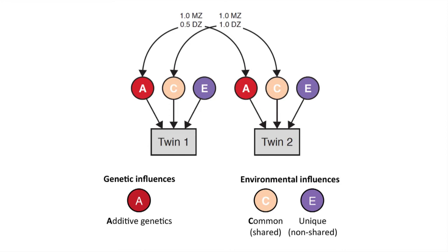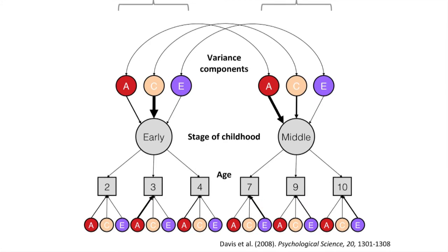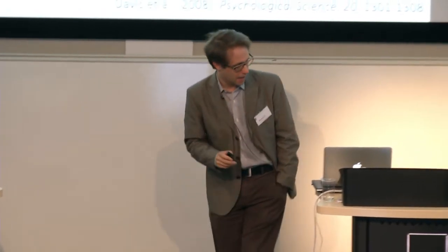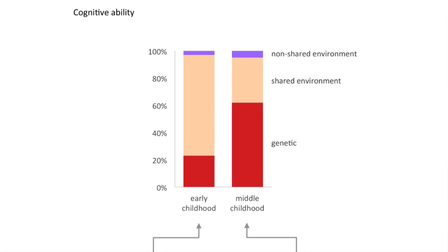You might think that once you've calculated heritability for any particular trait, that's all you get out of it — but that's not true. If you've measured the same characteristic at different times, you can look at the relationship between different measurements. Here we have IQ, or cognitive ability tests, measured at different ages from early childhood through to middle childhood. Surprisingly, in early childhood genes account for around 20% of the variance, whereas in middle childhood genetic factors account for around 60 to 70%.